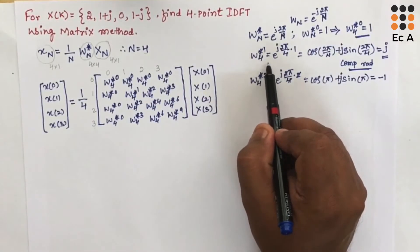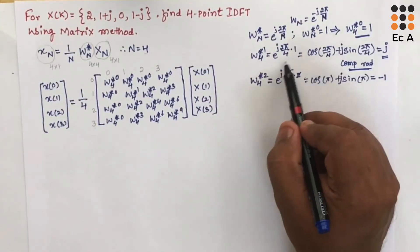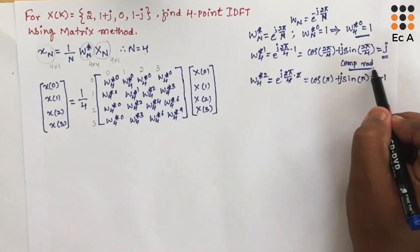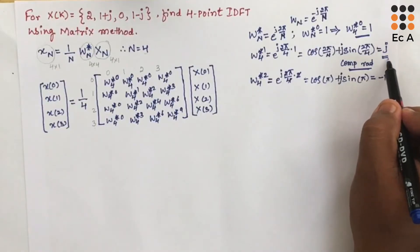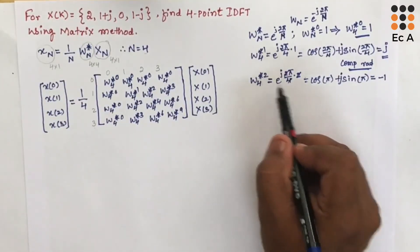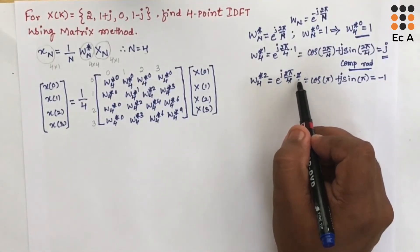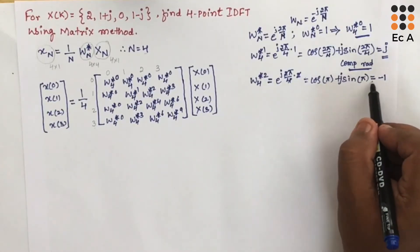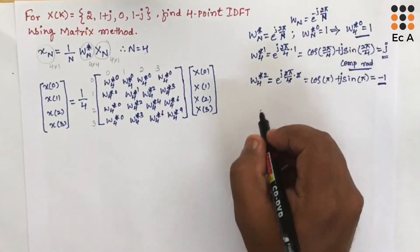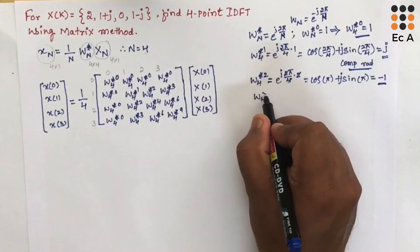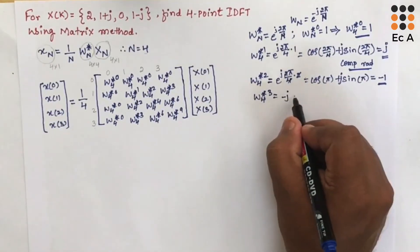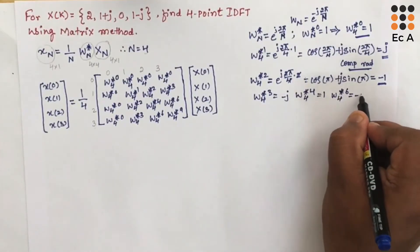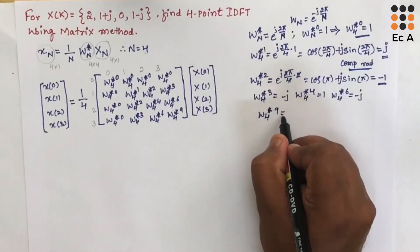Now we calculate the specific values: W4*^1 = e^(j2π/4) = cos(2π/4) + j·sin(2π/4) = j. W4*^2 = e^(j·2π/4·2) = cos(π) + j·sin(π) = -1. W4*^3 = -j. W4*^4 = 1. W4*^6 = -j. W4*^9 = j.